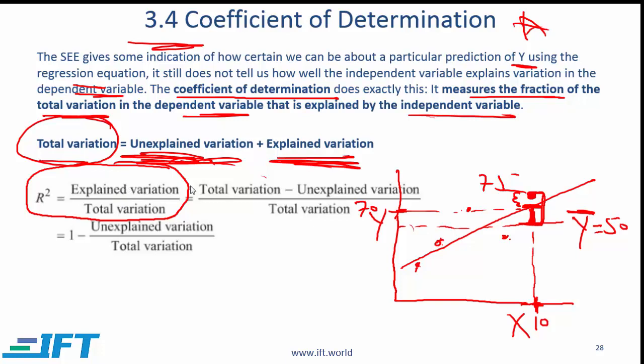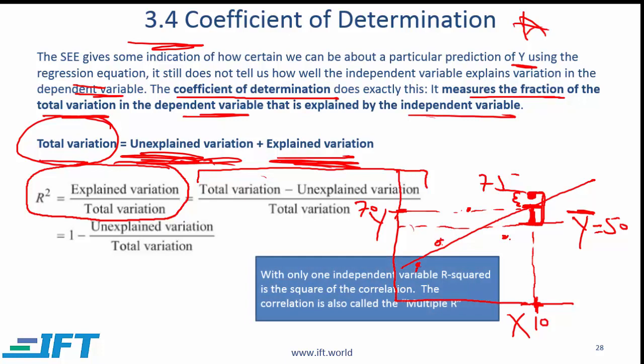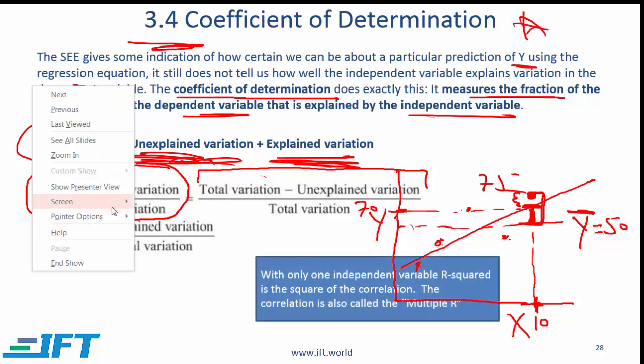Explained variation based on the formula is simply this or mathematically you can also write this as 1 minus unexplained variation over total variation. So all these are just simple terms. Now a few other testable points that I want to cover.